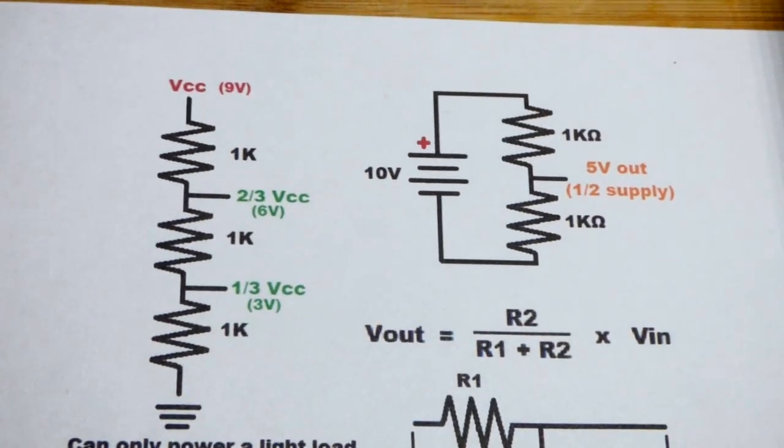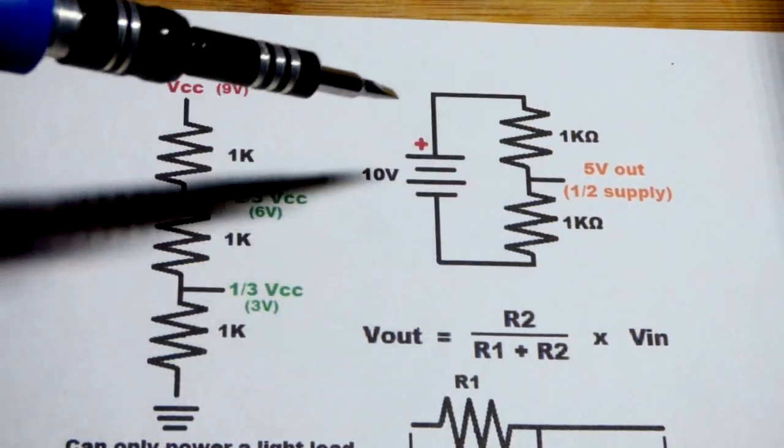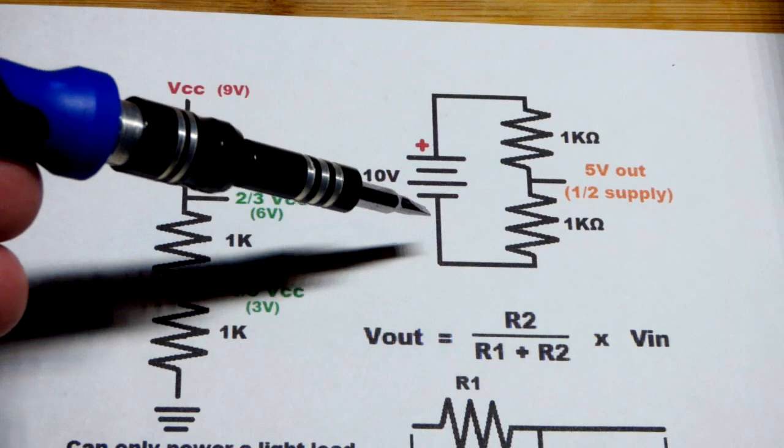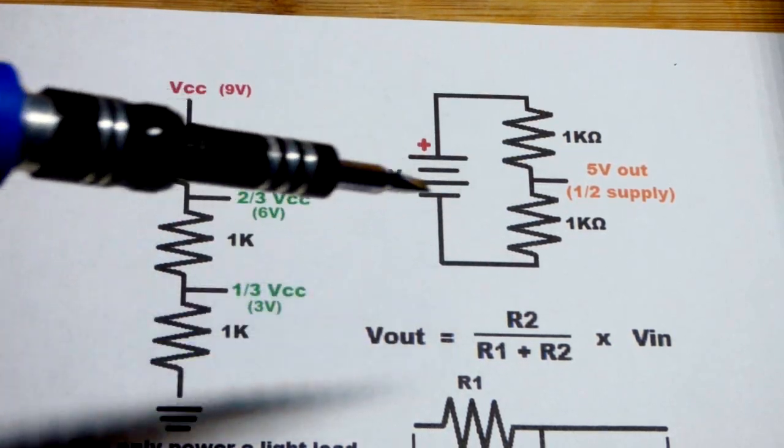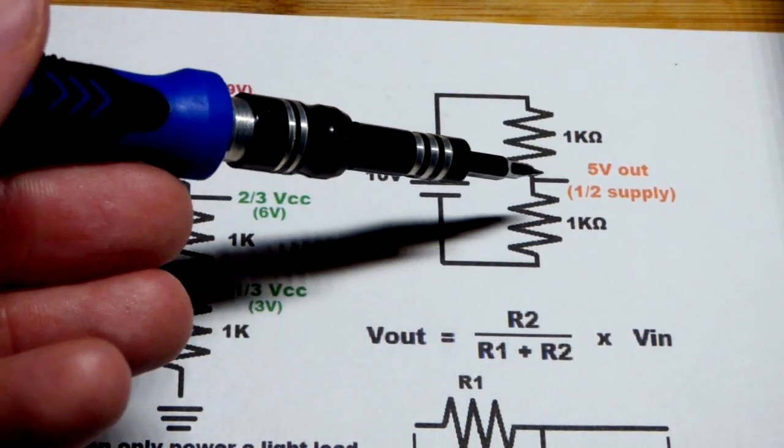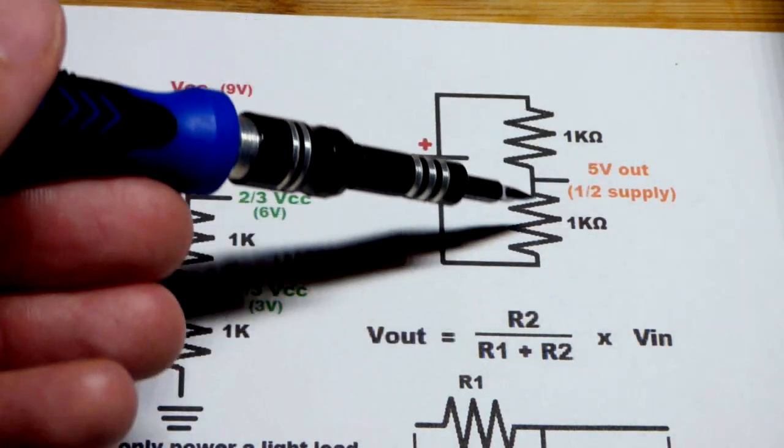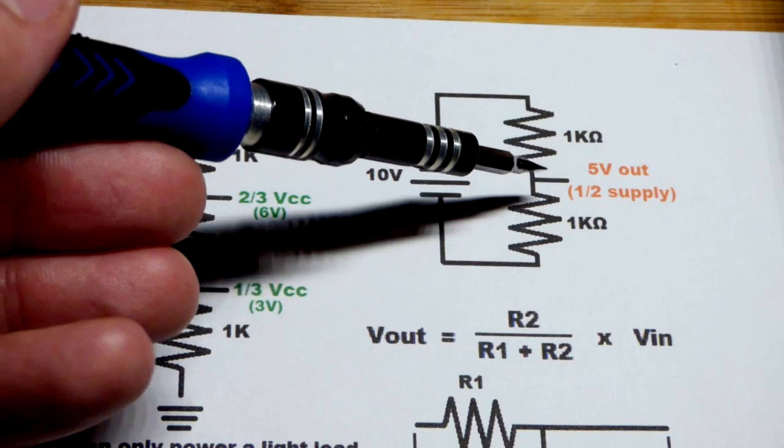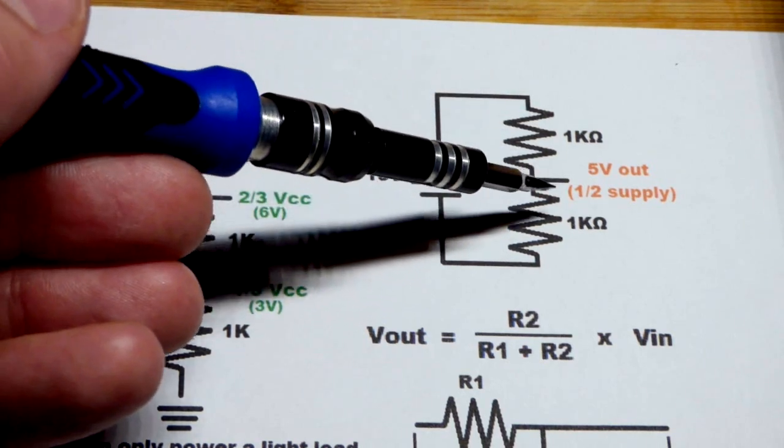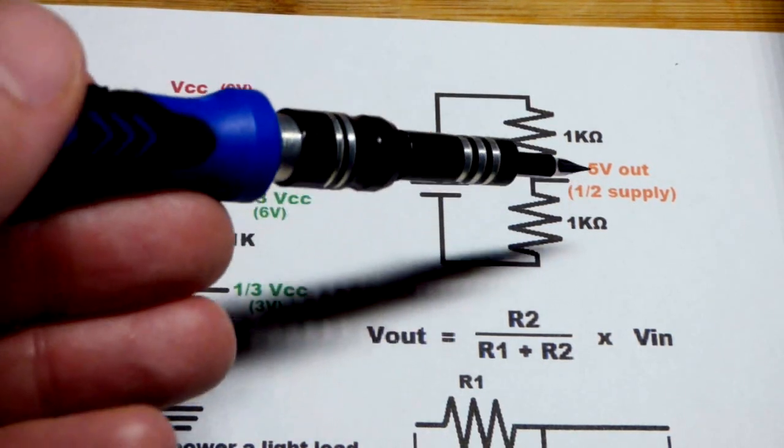If you take two equal value resistors and put them across a power supply, that's an odd looking circuit if you haven't encountered it before, but what it does is output half of the voltage. Since they're equal value resistors, half of the resistance is towards the positive side, half towards the negative side.